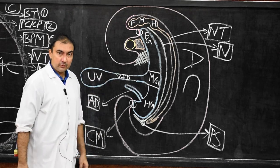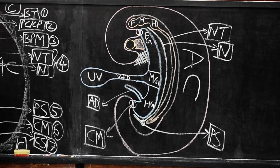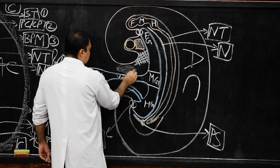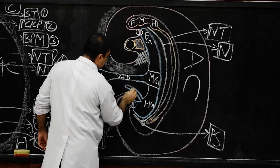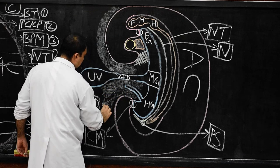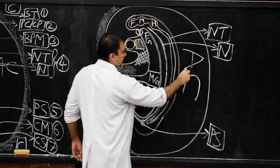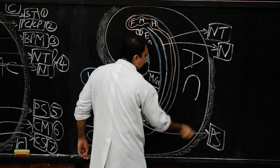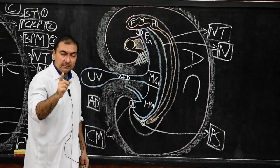Now draw the extra embryonic mesoderm. The entire extra embryonic mesoderm surrounds these two cavities — starting from here, surrounding the entire structure, and also surrounding the dorsal surface of the amniotic cavity. This is how we show the extra embryonic mesoderm. Our diagram is now complete.